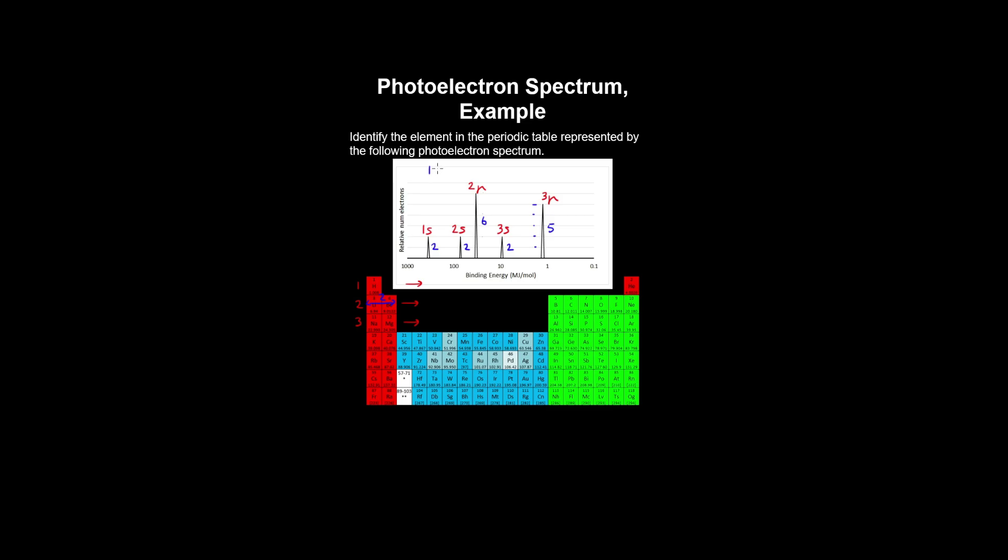Therefore the electron configuration of our element is written as follows, and that's representative of chlorine.